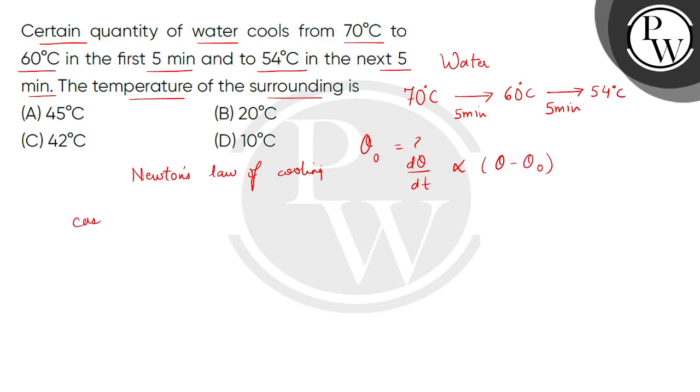If we consider case 1, then D theta is 70 minus 60 divided by 5 equals to K times the average temperature 65 minus theta naught. So the first equation is 10 divided by 5, which means 2 equals to K times 65 minus theta naught.